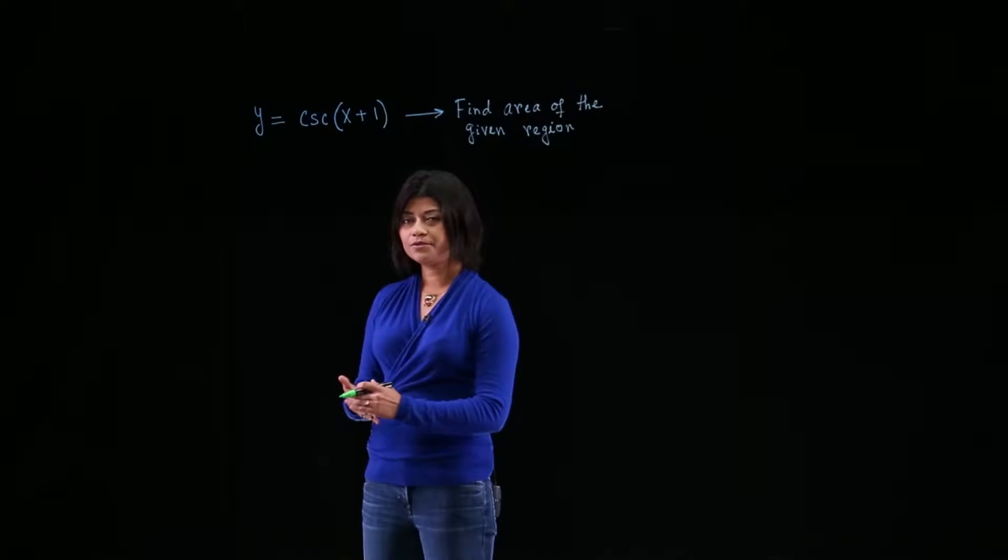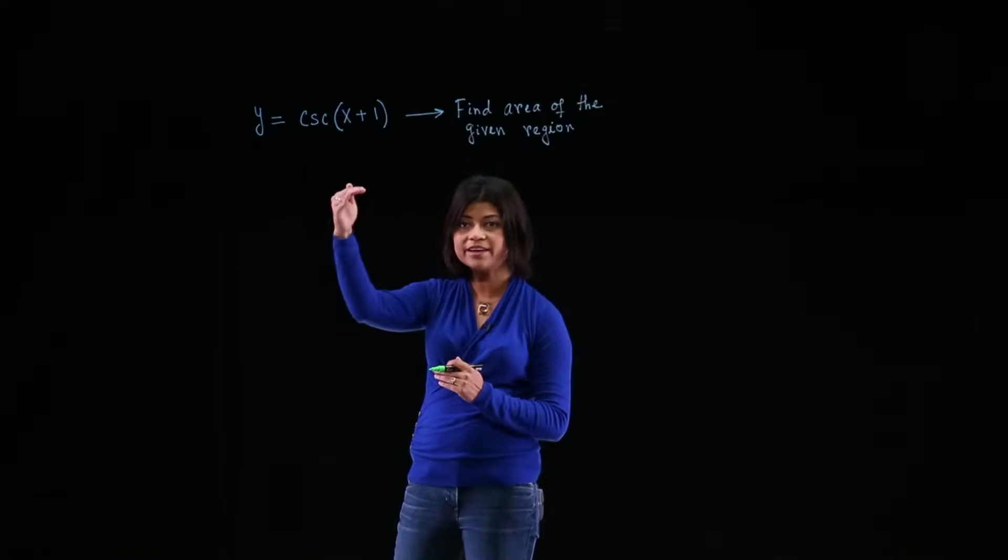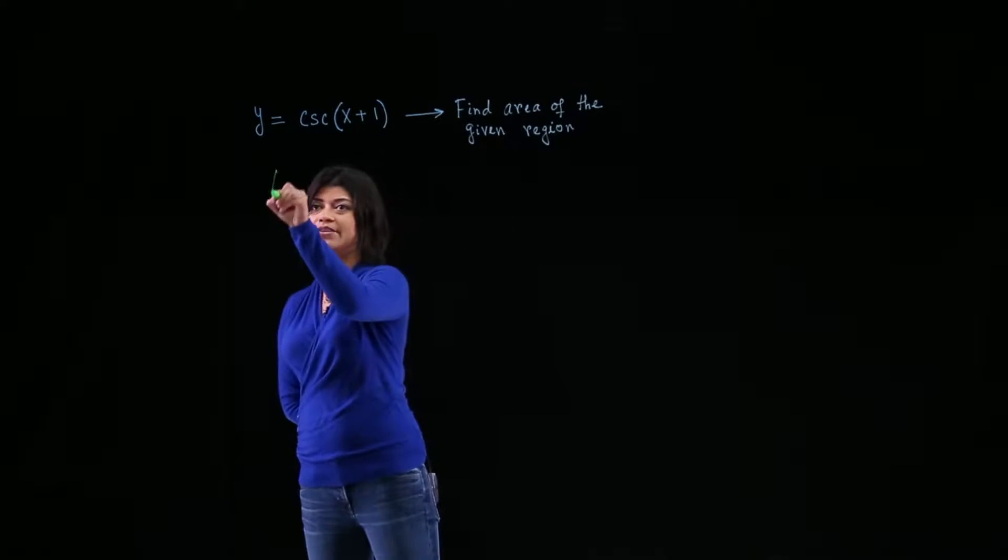So if you look at the graph, you see that the function is positive. And you're finding the region below it, above the x-axis, between 0 and 1.